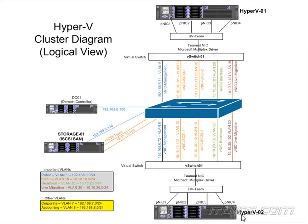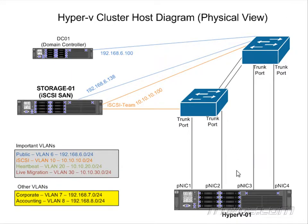The goal for our cluster is to have our nodes configured the same. If we can do that, it really helps out if we're having problems or when we're migrating virtual machines from one host to another. So in our cluster, Hyper-V02 and Hyper-V01 are going to be built the same — it's just they'll have different IP addresses.